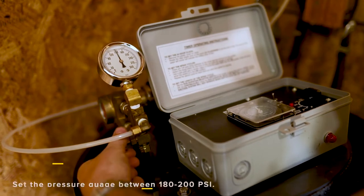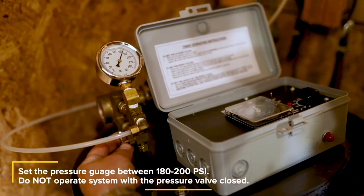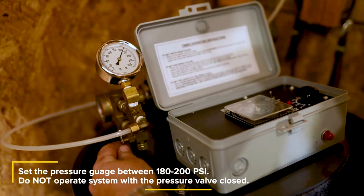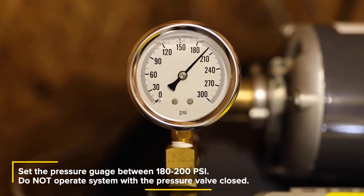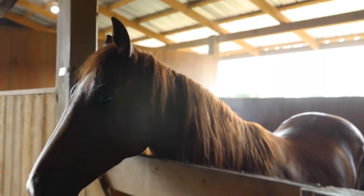Turn the pressure regulating valve clockwise until the pressure gauge reads between 180 and 200 psi and all nozzles are spraying a consistent fine mist.